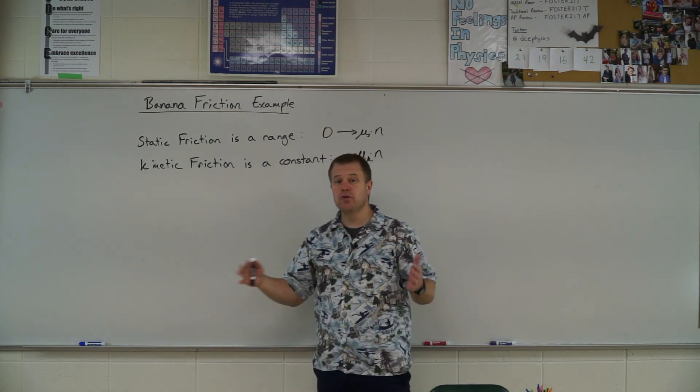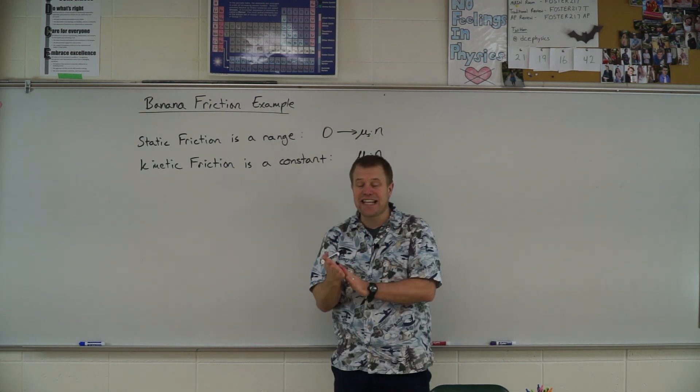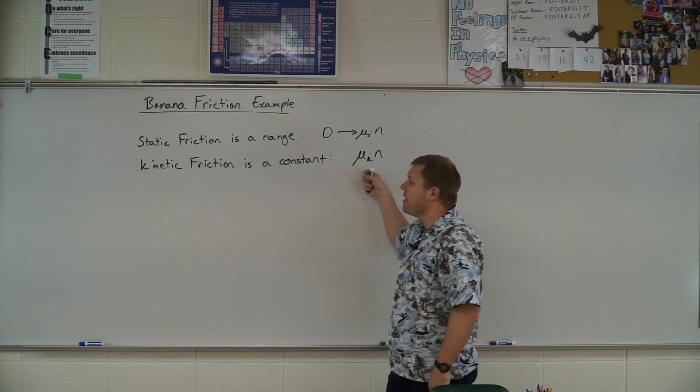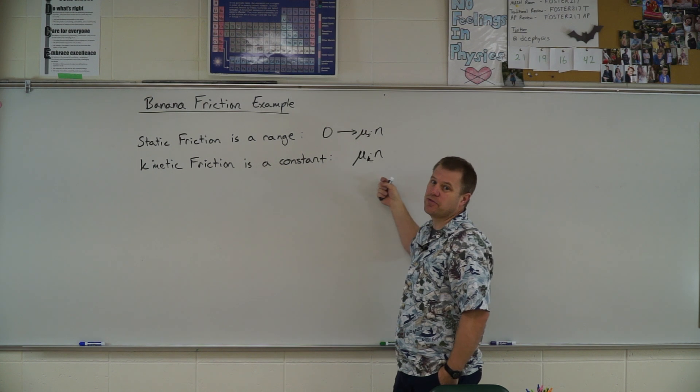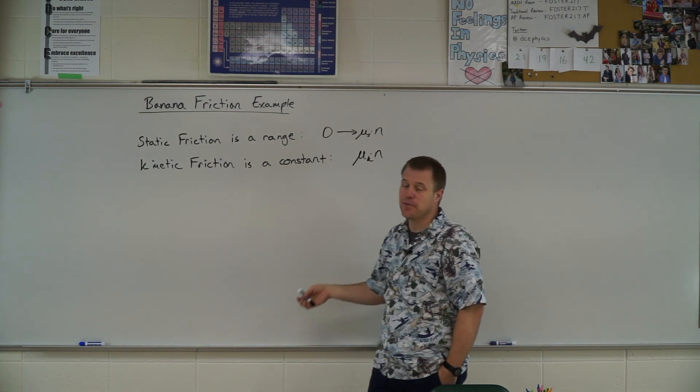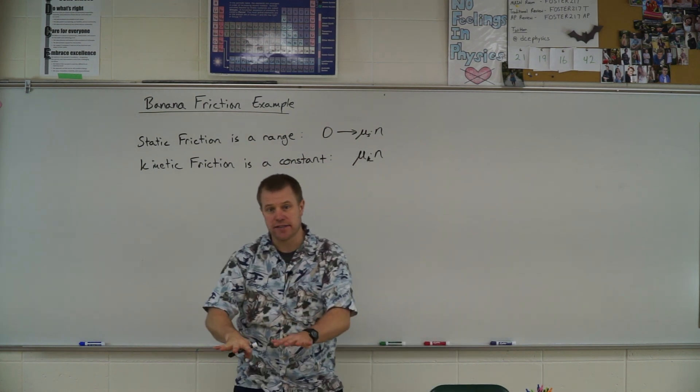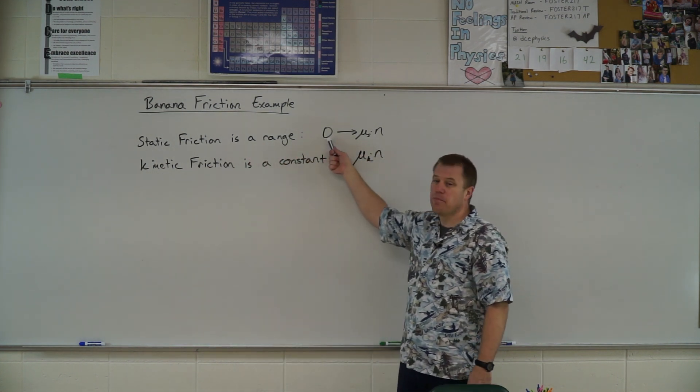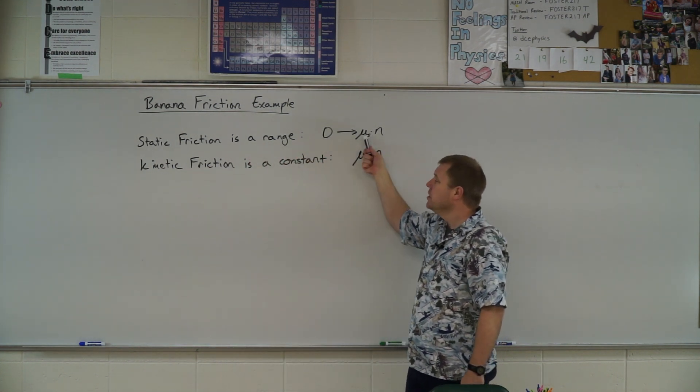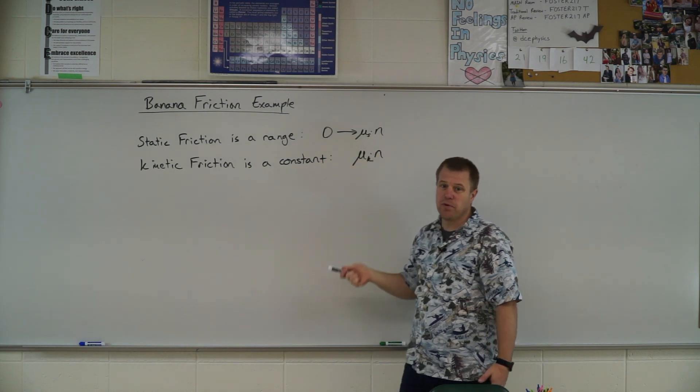If it is in motion, if those two surfaces are sliding, we have a kinetic friction problem and the coefficient of friction times the normal force tells me the force of friction and it's a constant value. So if my box is at rest, no sliding, that means I have a static friction. That means that number can be anywhere from 0 to whatever mu sub s times normal force is.